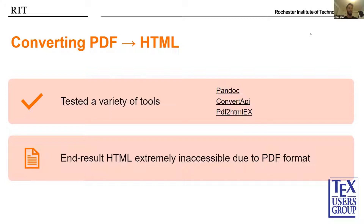I'm Suhas, our developer. In this stage, by converting PDF to HTML, we tried out numerous tools. The three major tools we tested are Pandoc, Convert API, and PDF2HTMLx. All of these tools served our purposes to some extent by extracting all the text from the PDF. However, these tools failed to recognize equations, tables, and figures. As a result, the HTML obtained from these tools was extremely inaccessible.